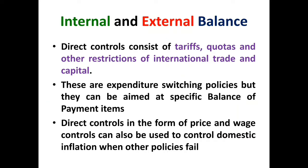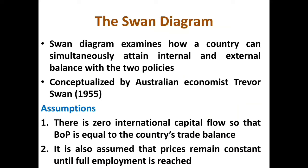Now we are shifting our focus to the SWAN diagram. The SWAN model examines how a country can simultaneously attain internal and external balance using two policies — expenditure changing as well as expenditure switching policies. It was conceptualized by the Australian economist Trevor Swan. The model assumes zero international capital flow so that the balance of payment equals the country's trade balance. It also assumes that international trade is free and prices remain constant until full employment is reached.